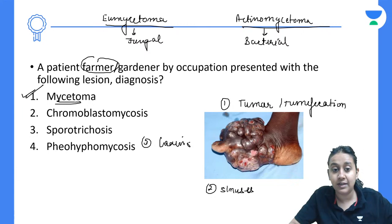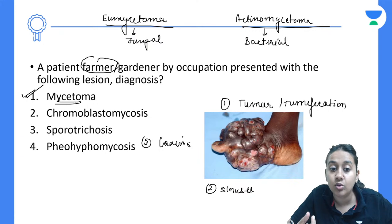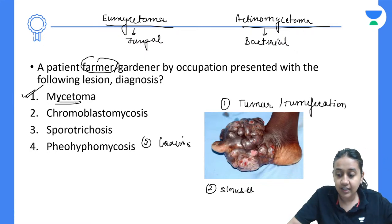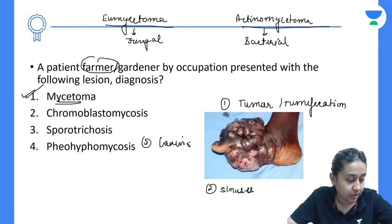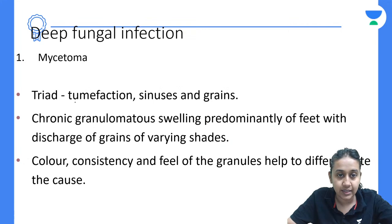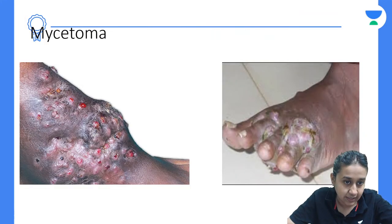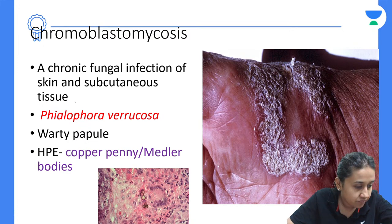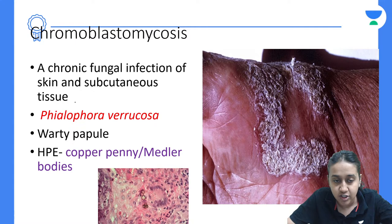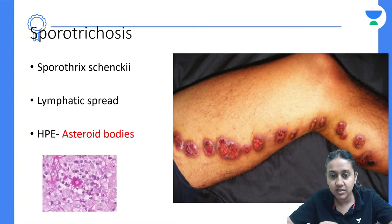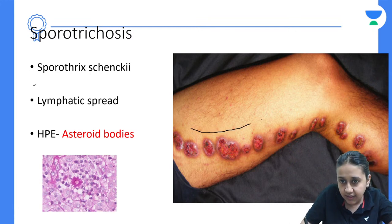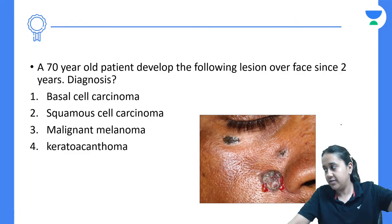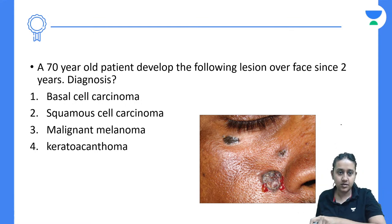In chromoblastomycosis they will write 'verrucous growth,' 'warty growth,' or 'cauliflower-like growth.' Sporotrichosis has a linear sort of presentation. This is mycetoma — swelling, tumefaction, and grains. Chromoblastomycosis shows a verrucous growth on the surface; sporotrichosis shows a linear presentation.